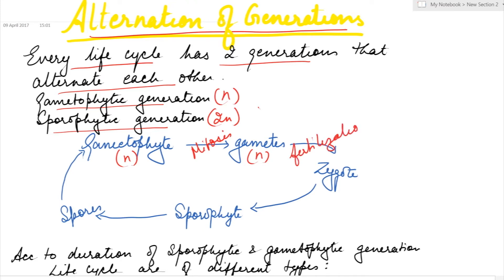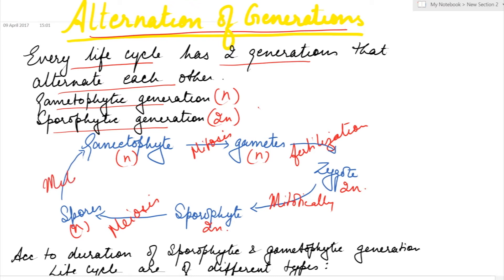The zygote is diploid. The zygote then divides mitotically to form the sporophyte, which is also diploid. The sporophyte produces haploid spores after meiosis, and these spores divide mitotically to form the gametophytic generation.